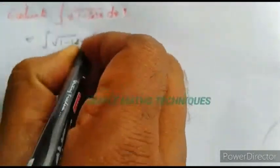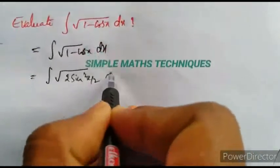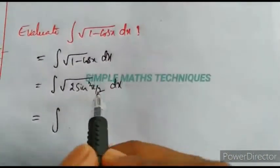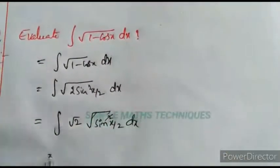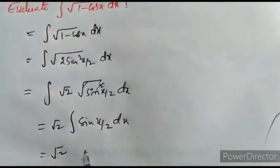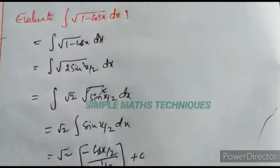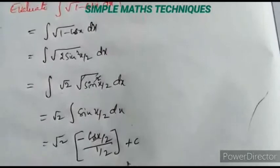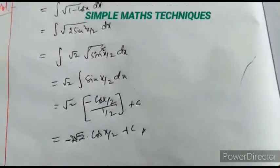The next problem: evaluate integration of √(1 - cos x) dx. Using the sub-multiple angle identity: 1 - cos x = 2 sin²(x/2). So √(1 - cos x) = √2 · |sin(x/2)|. The integral becomes √2 · integration of sin(x/2) dx = √2 · (-cos(x/2))/(1/2) plus c = -2√2 · cos(x/2) plus c. This is the solution.